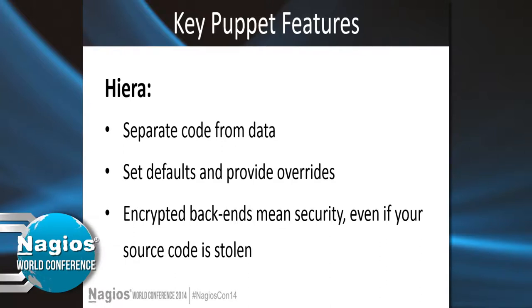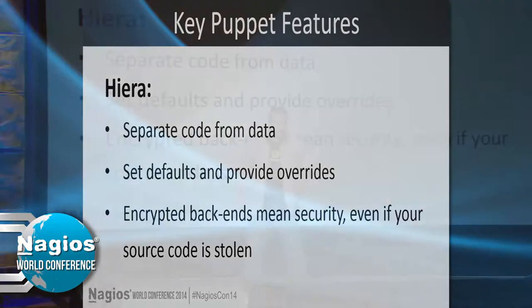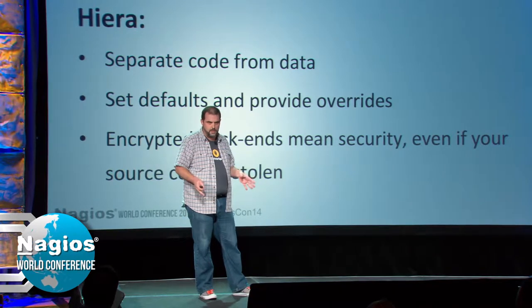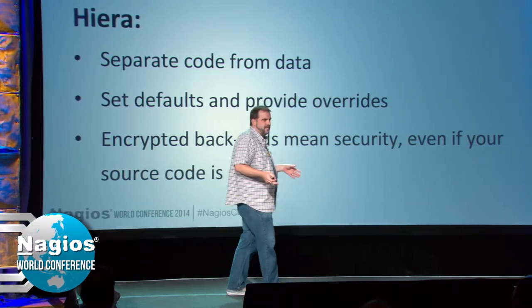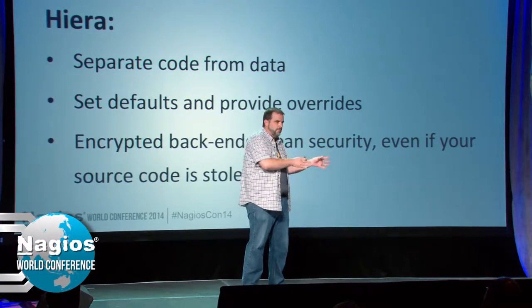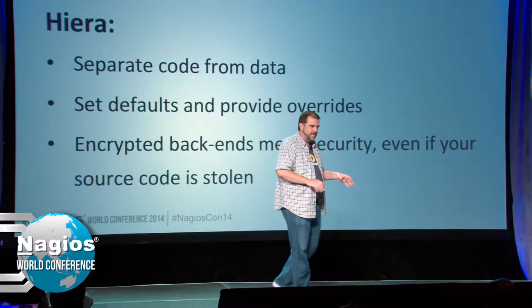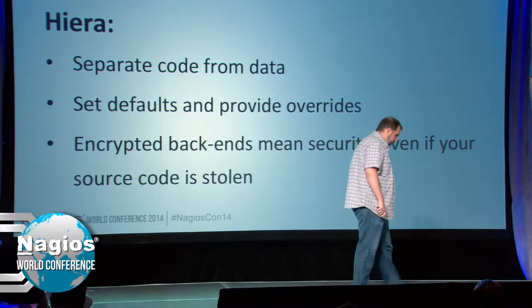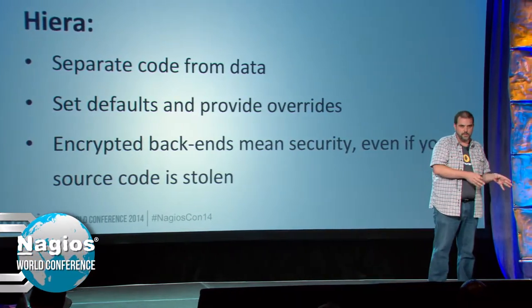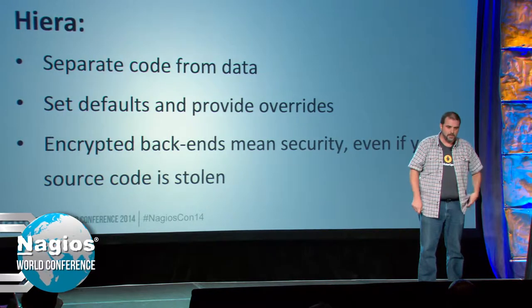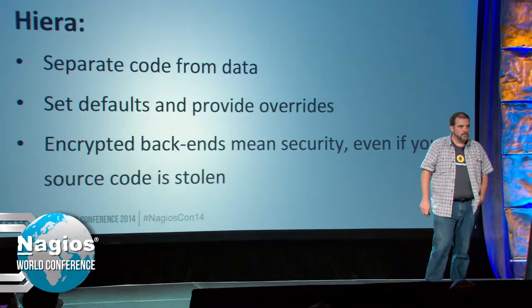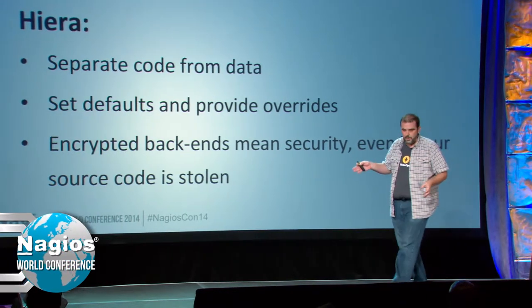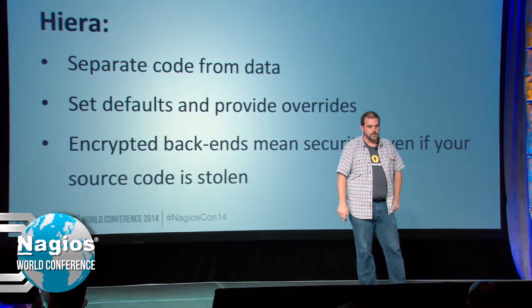Hiera is a hierarchical data store that goes along with Puppet and allows you to separate your code from your data. Things like IP addresses and passwords that are likely to change over time, or differ between environments or locations, stay out of your source code and are managed separately — easier to find, manage, and keep secure. It's hierarchical, meaning you can set defaults and then provide overrides on an environment, location, or individual host basis. Very flexible.